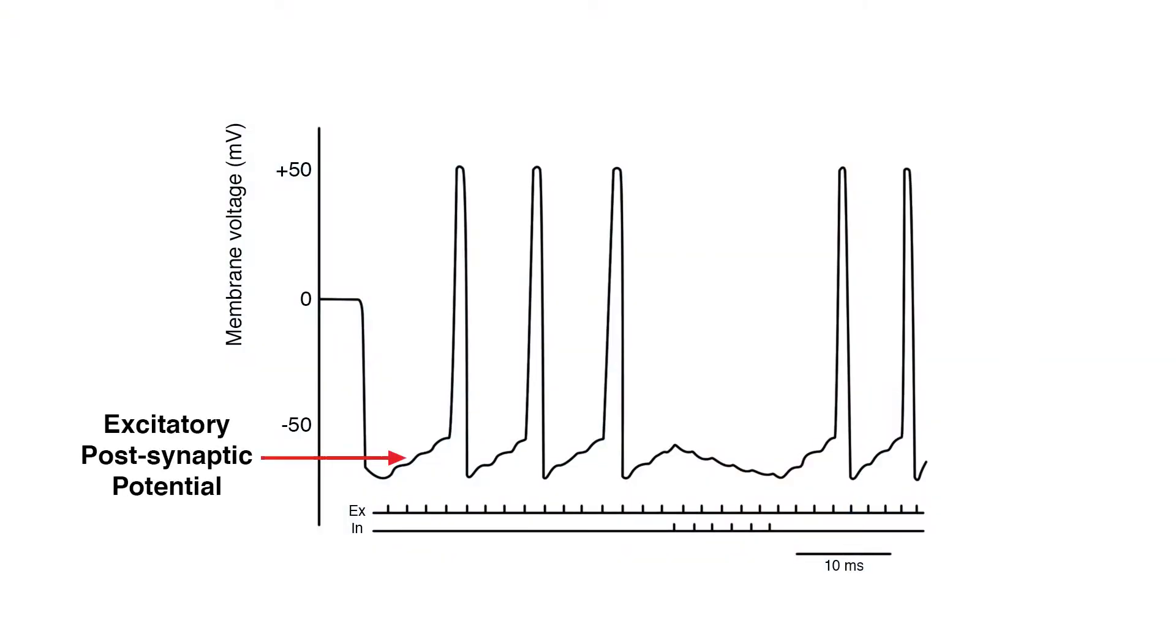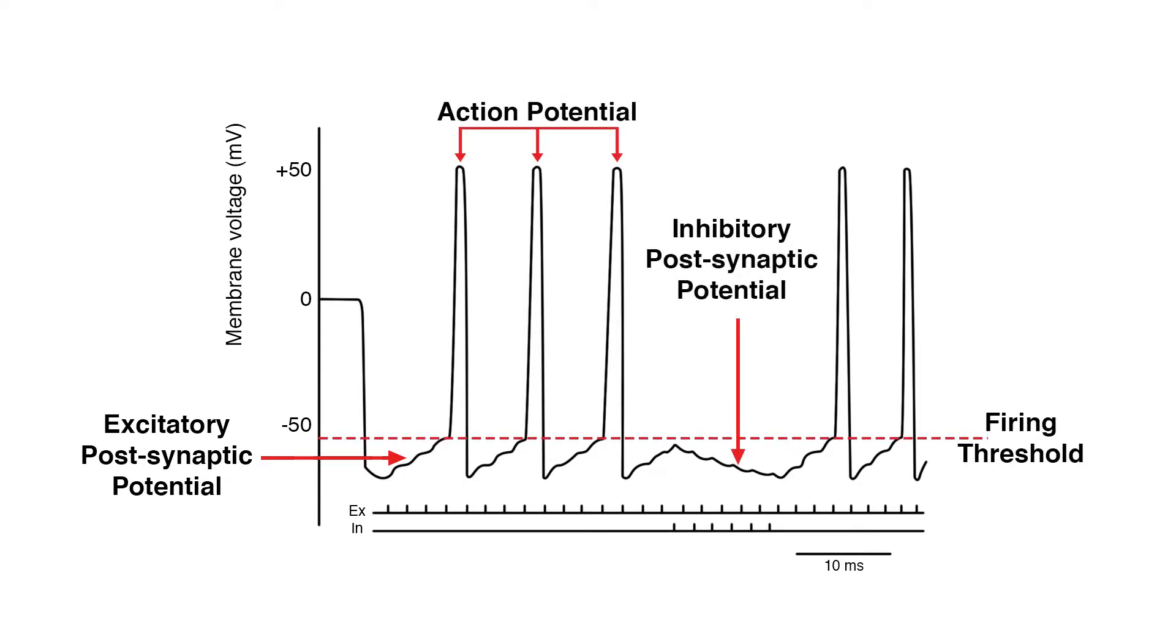There's a dynamic interplay between excitation or depolarization and inhibition or hyperpolarization. In this drawing, you can see how EPSPs add up and how, if they reach the firing threshold, how the neuron generates an action potential. You can also see here how IPSPs can add up and inhibit the cell, making it less likely to fire.